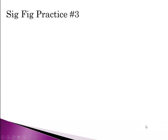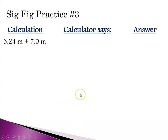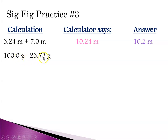Let's do more sig fig practice with addition and subtraction calculations. For the first problem, we're adding with hundredths place versus tenths place, so we round to the tenths place. The correct answer is 10.2. In the next problem, we have tenths place versus hundredths place. The calculator gives a longer decimal, but we round to the tenths place, so the answer is 76.3.